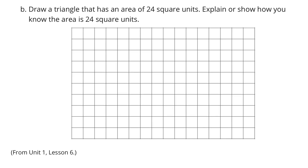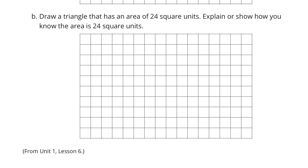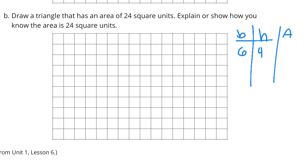And our next question: draw a triangle that has an area of 24 square units. Explain or show how you know that the area is 24 square units. We can still follow the base times height idea, except base times height divided by 2 is how we find the area of a triangle. So 6 times 4 gives 12 — not 24. What if I use 6 times 8? 6 times 8 is 48, divided by 2 is 24. Let's go with 6 and 8.